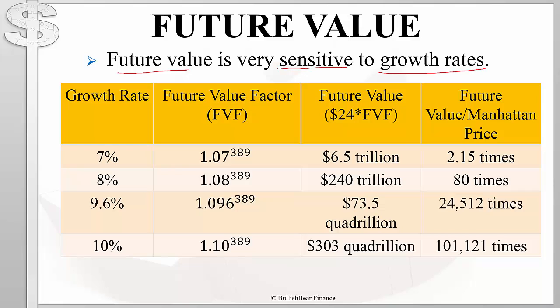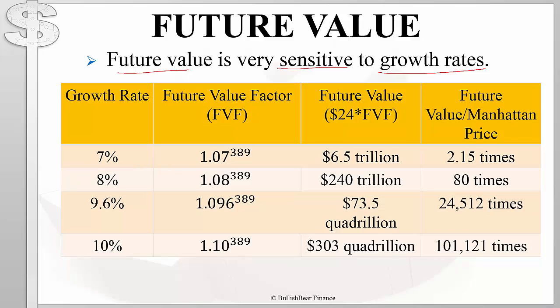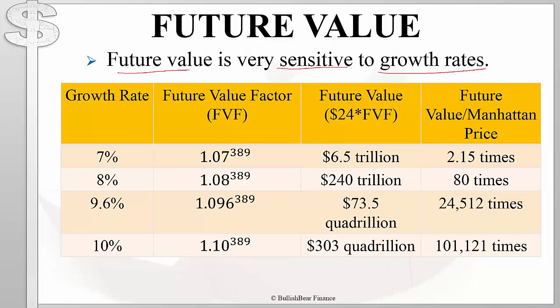The future value is very sensitive to the growth rates we assume in our calculations. That nine point six percent is a bit unrealistic because it's not possible to get that kind of return over almost 400 years. Also, that 9.6% does not take into account inflation. If we assume an inflation rate of about two point five percent, our growth rate would approximately be seven percent.